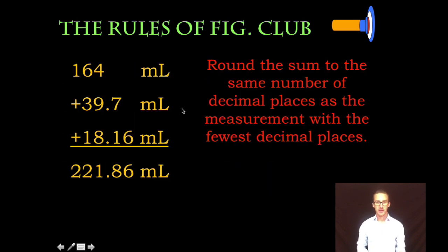So let's take a look at the example on your screen. I've got three measurements here: 164 milliliters, 39.7 milliliters, and 18.16 milliliters. If I add those volumes together using my calculator, I'm going to get this number right here, 221.86 milliliters.